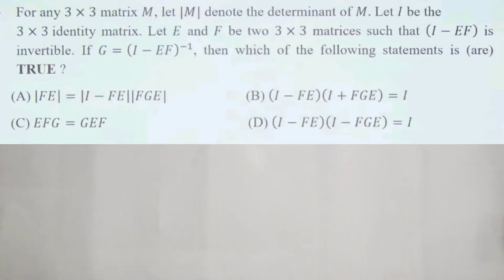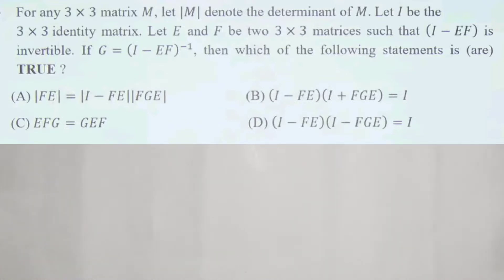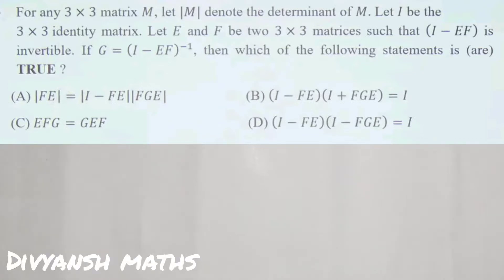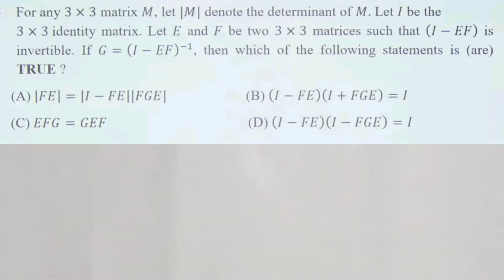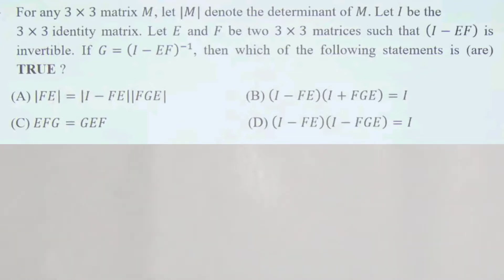Matrix question: For any 3×3 matrix M, let det(M) denote the determinant of M. Let I be the 3×3 identity matrix and let E and F be 2×3 by 3 matrices such that I minus EF is invertible. If G equals (I minus EF) inverse, then which of the following statements is true?